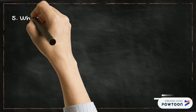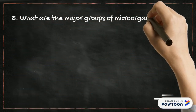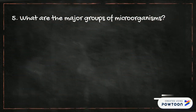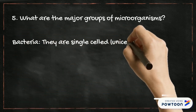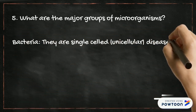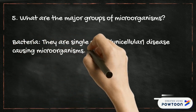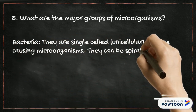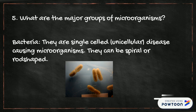The first major group of microorganisms is bacteria. They are single-celled disease-causing microorganisms — single-celled means they have only one cell. Bacteria exist in different types, including spiral-shaped and rod-shaped forms.